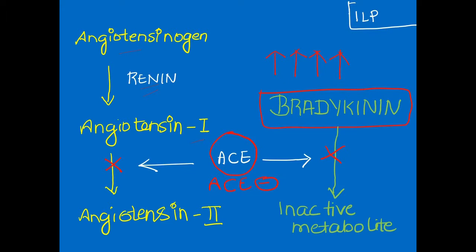...the conversion is carried out with the help of the ACE enzyme — angiotensin converting enzyme. Whenever you give ACE inhibitors, it will block the conversion of angiotensin 1 to angiotensin 2. At the same time, they also inhibit the conversion of bradykinin into its inactive metabolite.